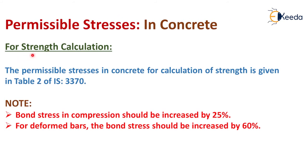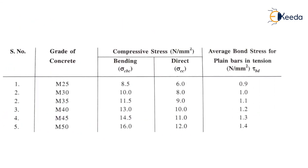For strength calculation, the permissible stresses in concrete are given in table 2 of IS 3370. Note: bond stress in compression should be increased by 25%. For deformed bars, the bond stress should be increased by 60%. This is the table used for strength calculation, and it depends on the grade of concrete.